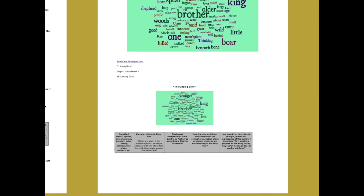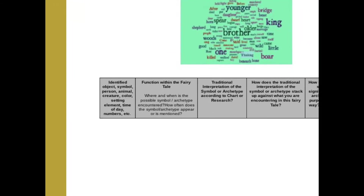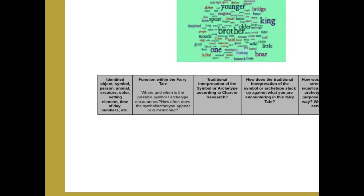What you'll do is create a document. Title it 'Singing Bone,' and when we transfer this to your own fairy tale, it'll be the title of that tale. Drop the JPEG file in, and then create a table with five columns. The number of rows will vary depending on how many items you identify as possible symbols or archetypes. The first column will be the objects and symbols that you identify as possibilities.